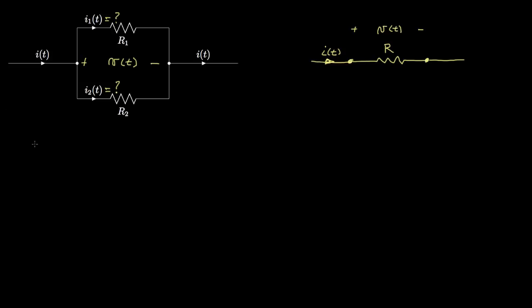To answer these questions, I'll need two equations. The first is from Kirchhoff's current law, and simply shows that the current I(t) is equal to the sum of the two currents that leave this node. So I'll write that as I(t) = I1 + I2.